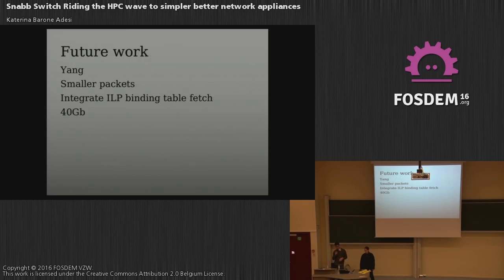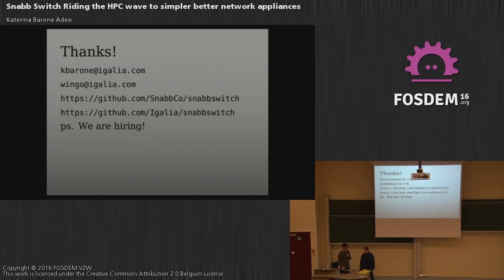On the to-be-determined side, we're probably going to adopt Yang as our central data model for configuration and push NetConf out to an exterior daemon. We're going to do more work on throughput for smaller packets — currently getting 70 nanoseconds but want to drop it to 50 by fetching binding table entries for multiple packets simultaneously. We've got 40-gig and 100-gig adapters coming, so we have to figure out how to provide all that bandwidth. We're also hiring — come work with us. Check out the code on GitHub under Igalia, and we're still upstreaming into Snap.